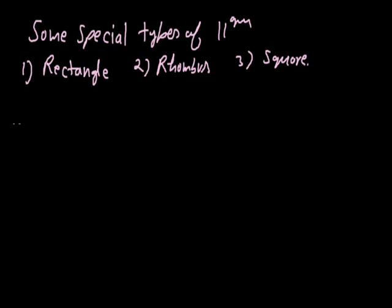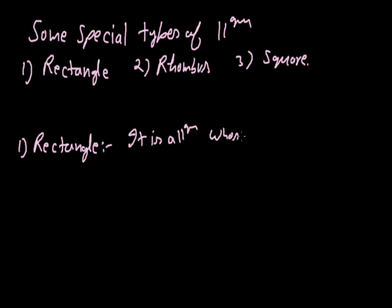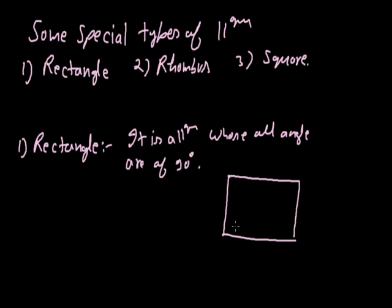First of all we discuss about rectangle. So what is a rectangle? Rectangle is a parallelogram whose all angles are of 90 degrees. So a shape like this can be a rectangle — all angles are 90 degrees, so this is a rectangle.